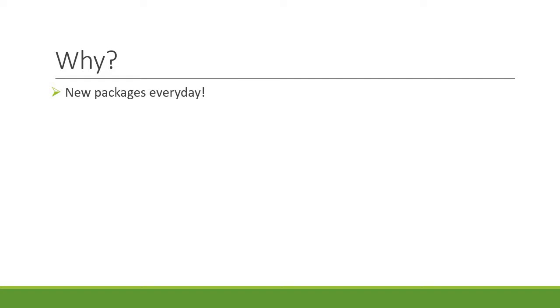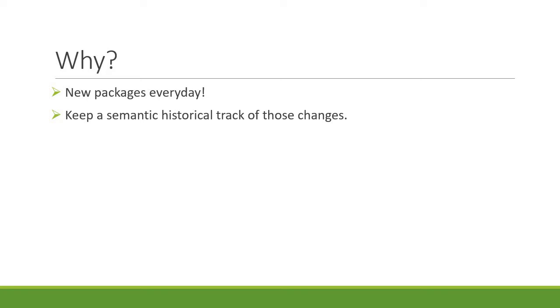Now why should you learn about semantic versioning? In today's world of web development, new packages, modules, plugins, and libraries are being created every single day. All of them at some point in time undergo a change, and it is crucial to keep a semantic historical track of those changes. Without any guidelines, version numbers are essentially useless for dependency management. This is where semantic versioning helps.